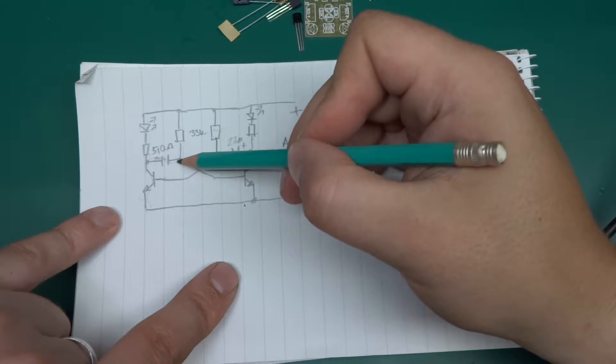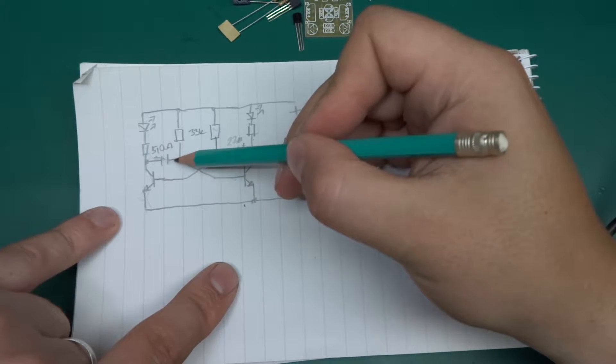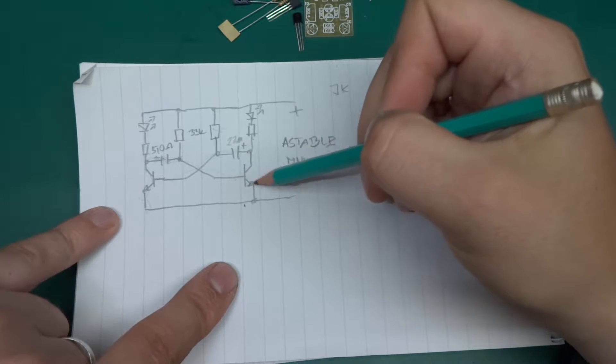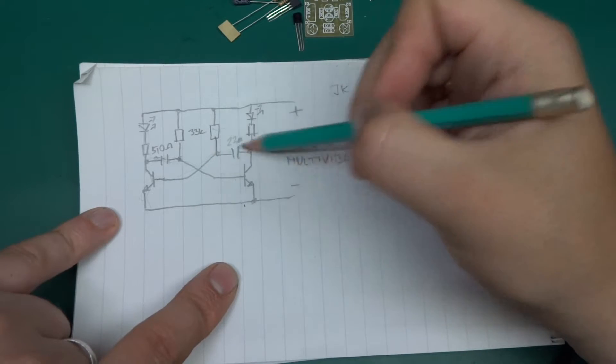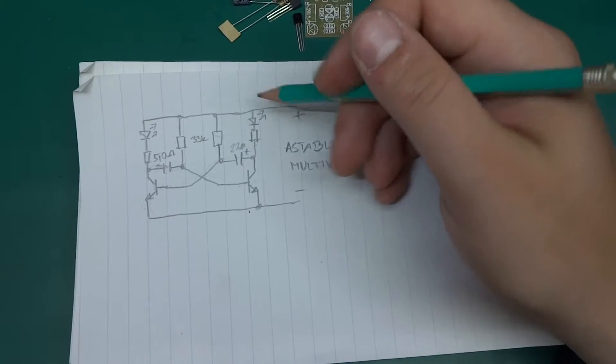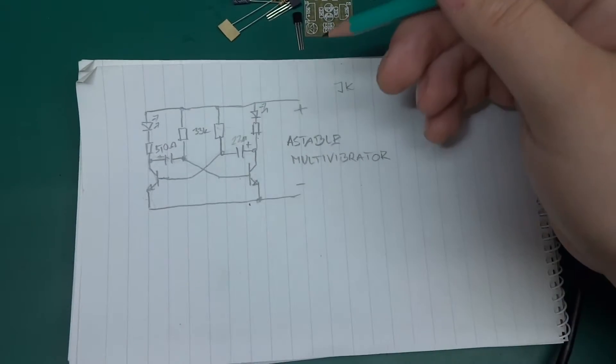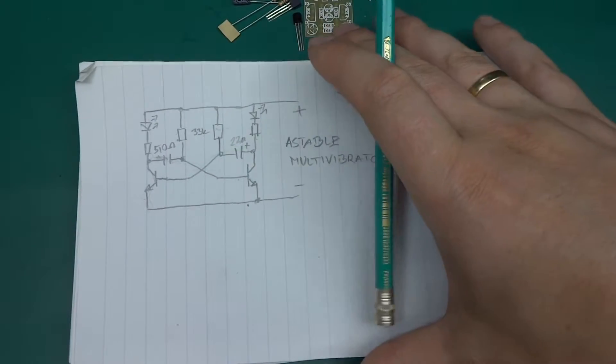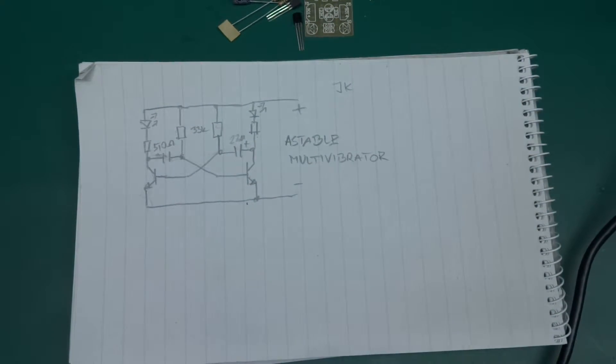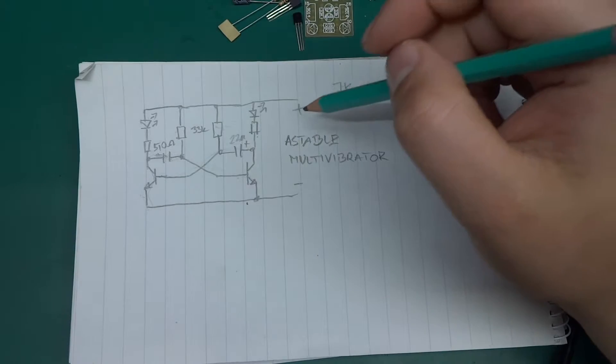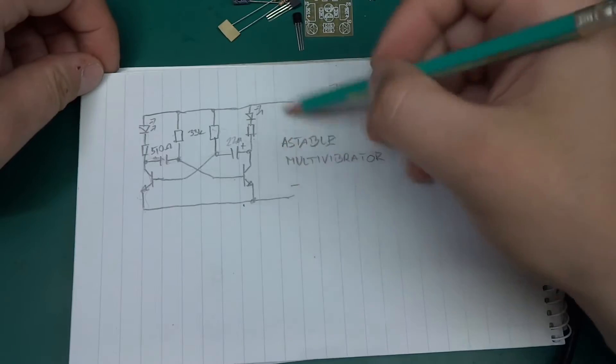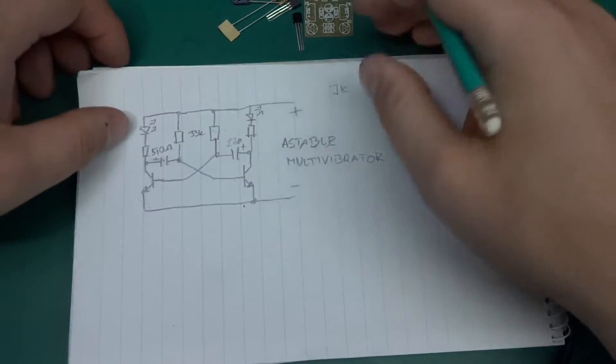The current goes through, effectively making this low potential because all there is to it is collector-emitter junction through a cap. While it's charging, it's almost zero resistance, so this will switch off this transistor until this cap is fully charged. The potential will rise because the cap is fully charged and current isn't flowing anymore, and that's how it works.